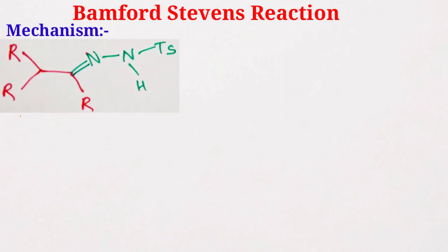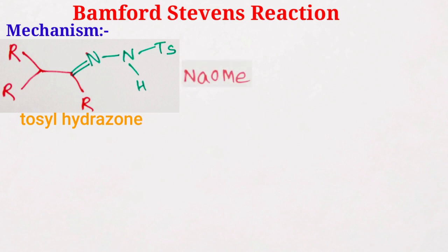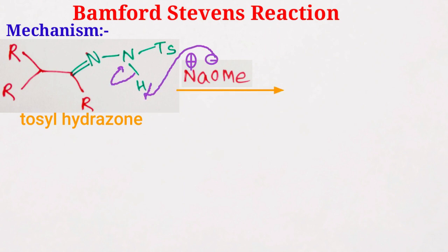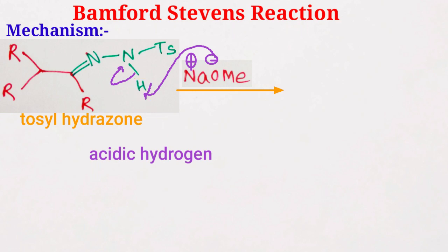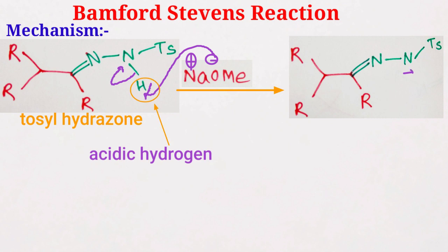Now, what is the mechanism of this reaction? This one is the tosylhydrazone, and in the presence of sodium methoxide, the base can take this proton because this proton is more acidic. This is a more acidic hydrogen due to the presence of a heteroatom, which is an electronegative element. That is why the base will take this hydrogen and we get a system with a negative charge located on the nitrogen atom, and after conjugation it will form this structure.